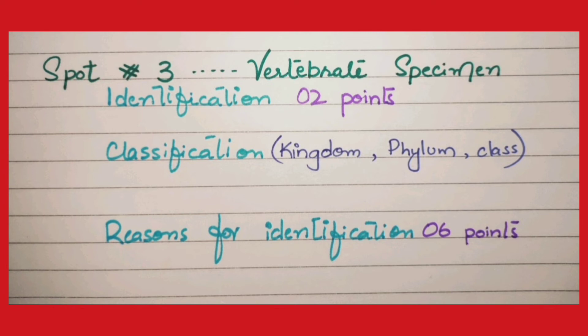Spot number three is always a vertebrate specimen. For identification, write a proper sentence such as 'The given specimen on spot number three is identified as dogfish.' For classification, write up to the class level: Kingdom Animalia, Phylum Chordata, and the Class — Aves, Mammalia, Reptilia, or whatever class it belongs to. Write down five proper reasons of identification to gain all six points.